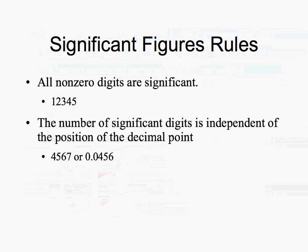The number of significant digits is independent of the position of the decimal point. In one number the decimal point is located here, and in another number it's located here. The number of significant figures in one would be represented as 3, while the other would be represented by 4. So regardless of where the decimal place is, we can still determine the number of significant figures.